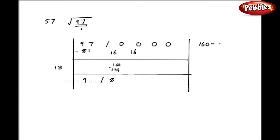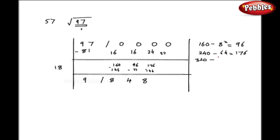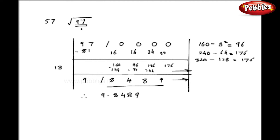The next figure is again 160, but I have to subtract the Dvandva of 8, giving 96 as my next figure for division. 96 divided by 18: quotient is 4, remainder 24. I have come one step down again. So 240 minus the Dvandva of 84 gives 176. 176 divided by 18: quotient is 8, remainder 32. From 320 I subtract the Dvandva of 848 and get 176. Dividing 176 by 18 gives 9. As the calculation can go on, and I have a single pair, my answer is 9.8489.